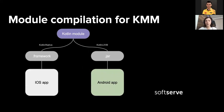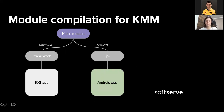When developing an SDK, we create a Kotlin module that compiles to a framework for Kotlin Native and to a JAR for Kotlin JVM, and our apps use the framework or JAR depending on which platform they are.